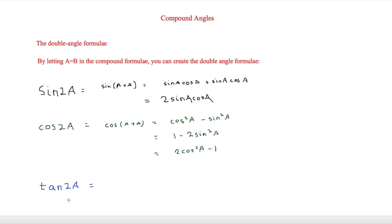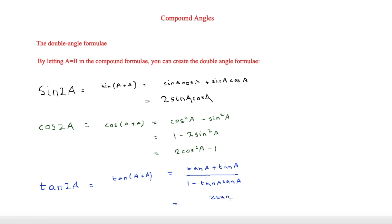Finally for the double angle formulae, tan 2A: we write tan(A + A), which gives tanA + tanA over 1 minus tanA times tanA. Simplifying, tan 2A = 2tanA over 1 − tan²A. So those are the five double angle formulae we need to learn.